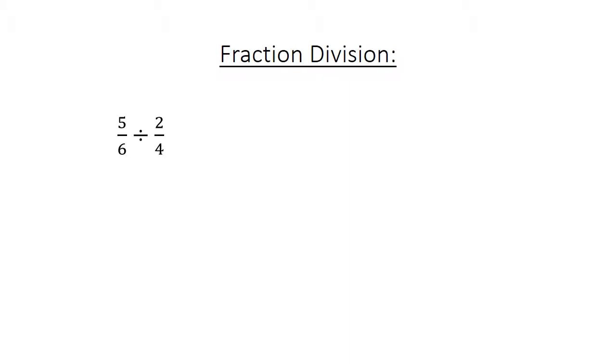Fraction division: 5 over 6 divided by 2 over 4 equals 5 over 6 times 4 over 2, equals 20 over 12, equals 1 and 2 over 3.